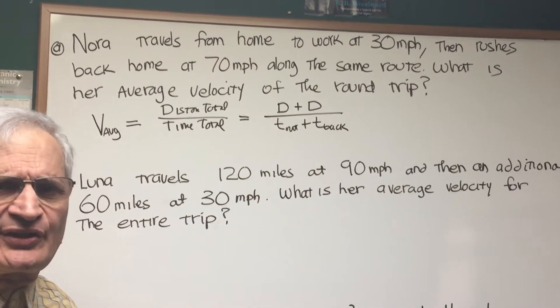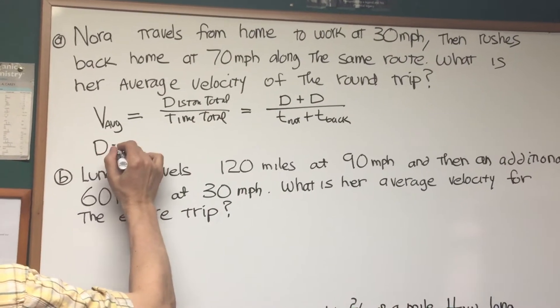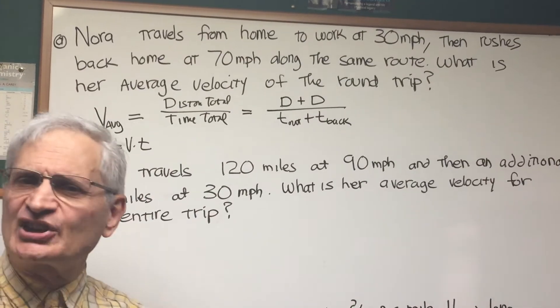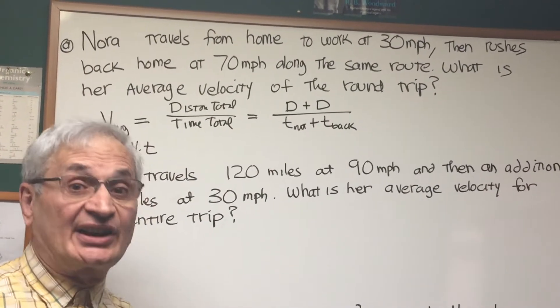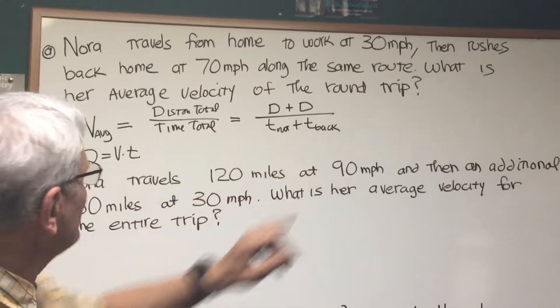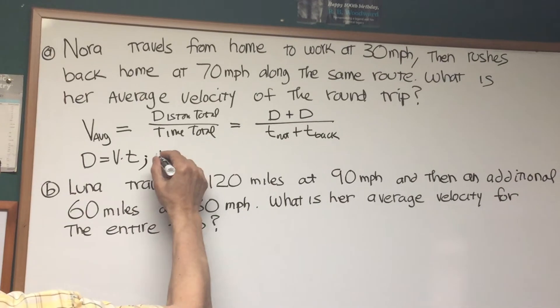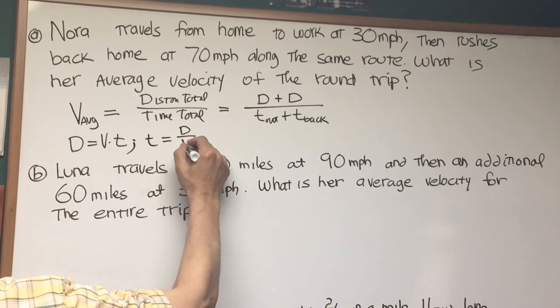Well, this is where we come to this equation. We know that distance equals velocity times time is pretty much the foundation formula for all these problems involving distance, velocity, and time. Here we want an expression for time. So from this expression, we're going to make a slight algebraic rearrangement. Time is distance over velocity.